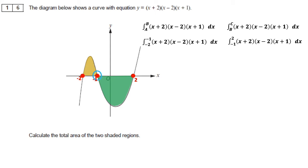The first integral gives the yellow shaded area and the second gives the green shaded area. Our next stage is to integrate. However, we first need to expand the brackets. Looking at the first two brackets, (x plus 2)(x minus 2) gives x squared minus 4.